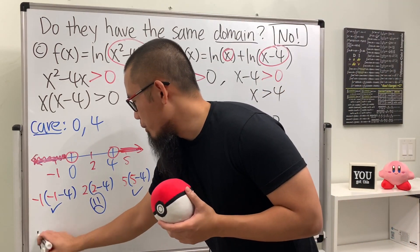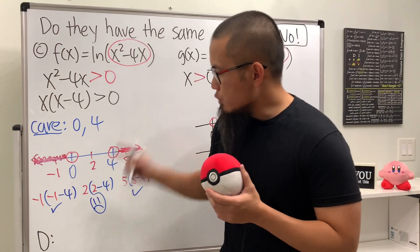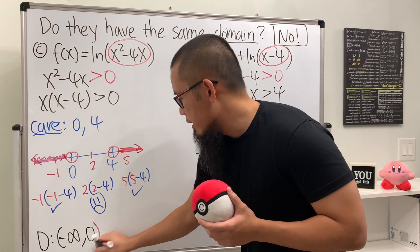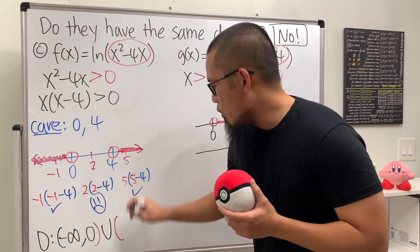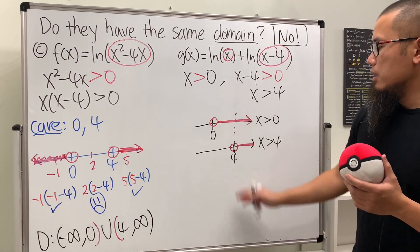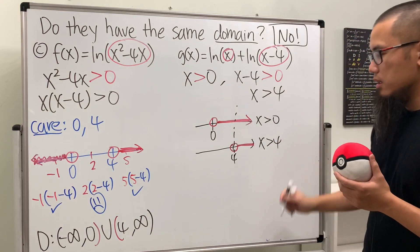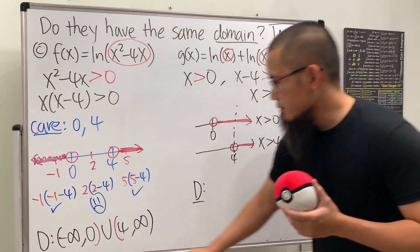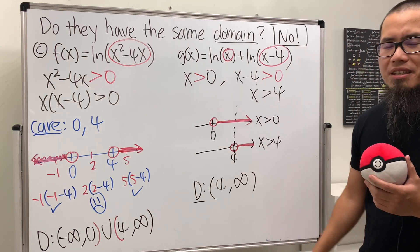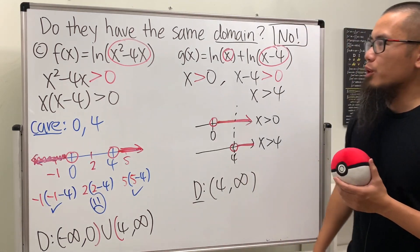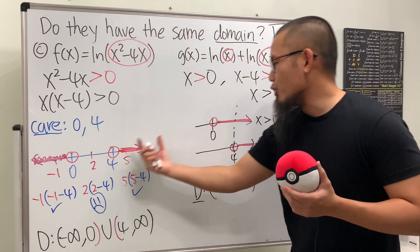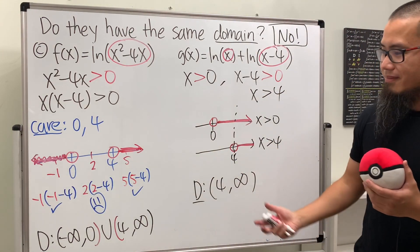So the domains differ. For f of x: from negative infinity to zero (not including zero), union from four to infinity. For g of x: just from four to infinity. Be really careful about when you can use the properties of logarithms — these two expressions are only equal on their common domain, which is four to infinity.